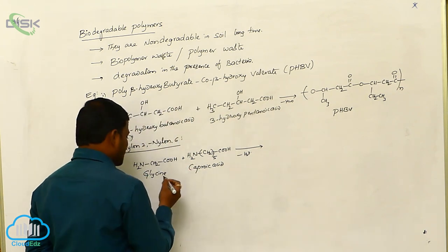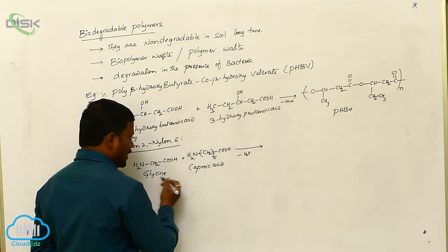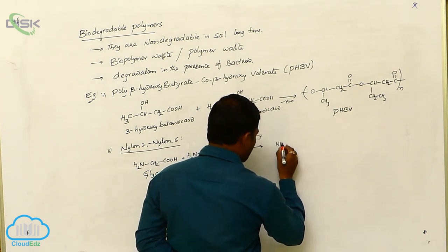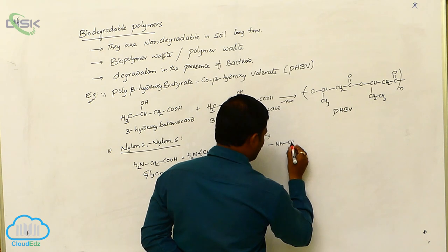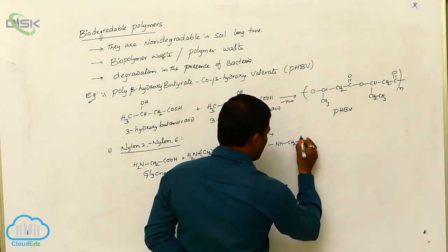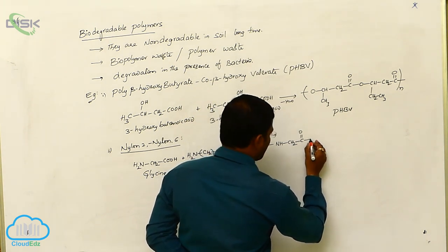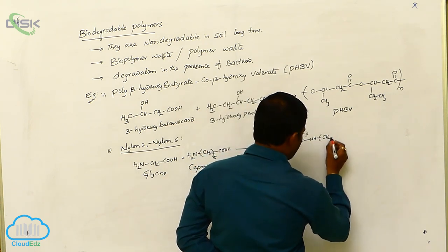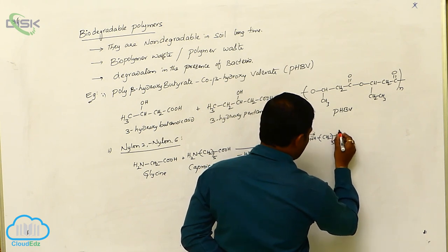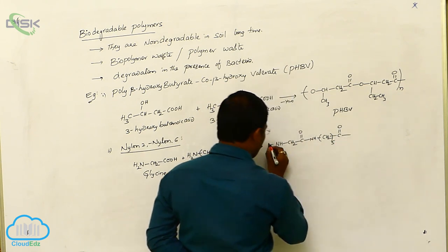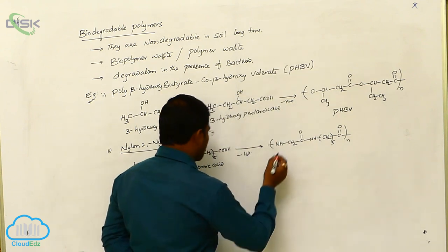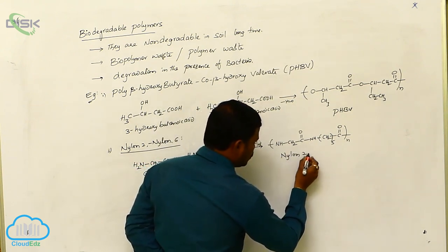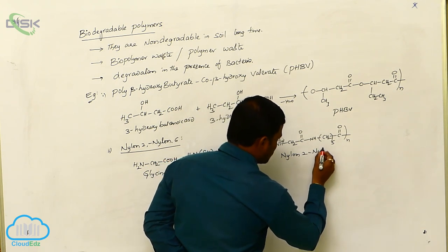Polyamide type of linkages are expected between glycine and caproic acid to produce NH, CH2, C double bond O, NH, CH2, then five CH2 groups, C double bond O. It will continue to extend its chain. The resulting compound is called Nylon 2, Nylon 6.